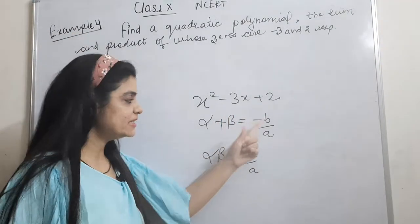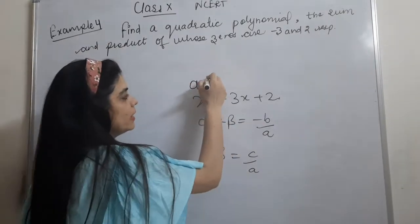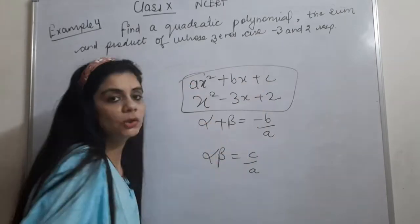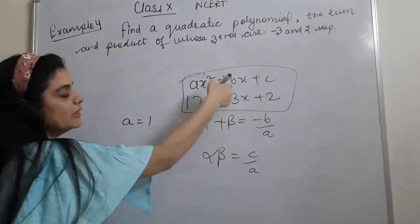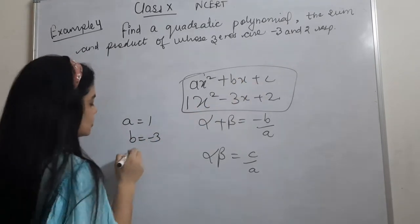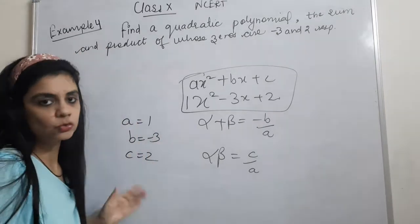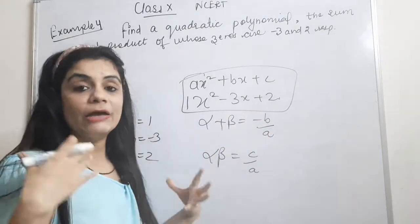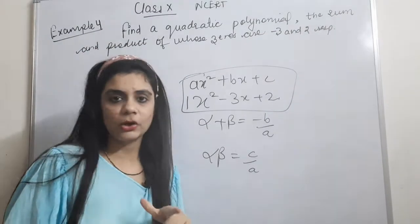What was the ABC? Where do I put the ABC values? I will get a equal to 1, b equal to minus 3, and c equal to 2. I will put these values of ABC into the formula and I will get the sum of the zeros and the product of the zeros.